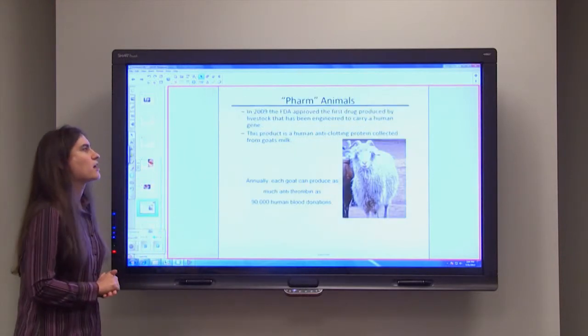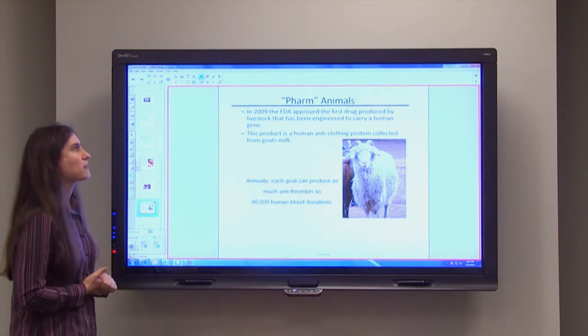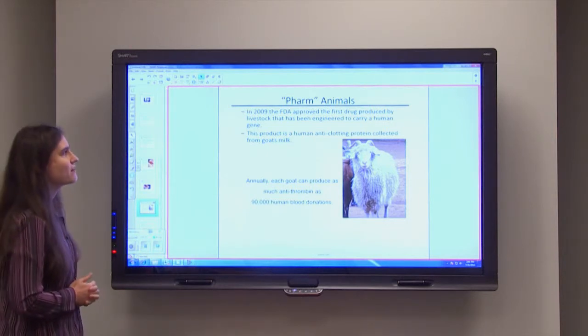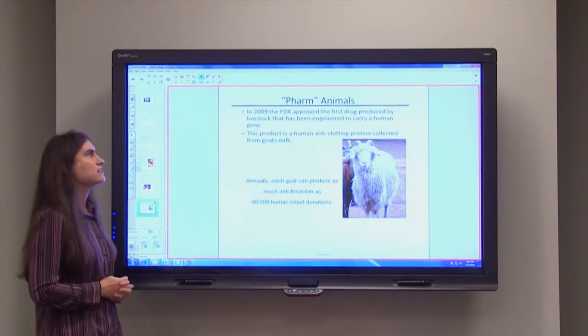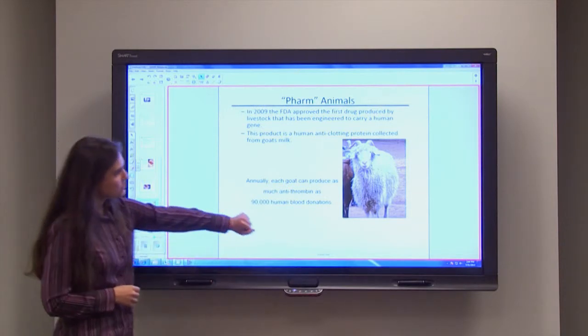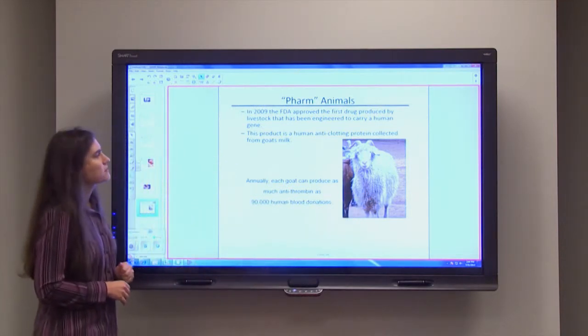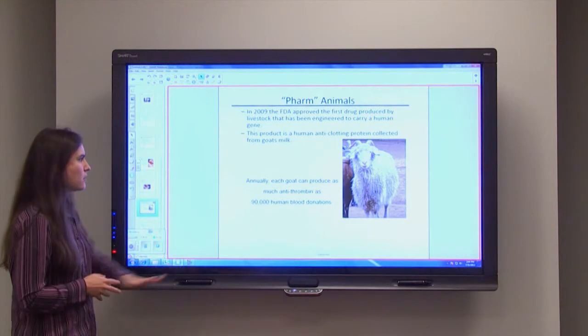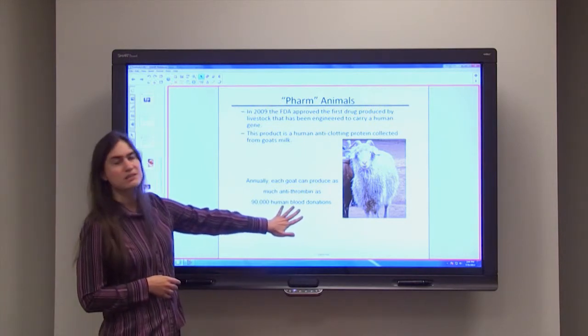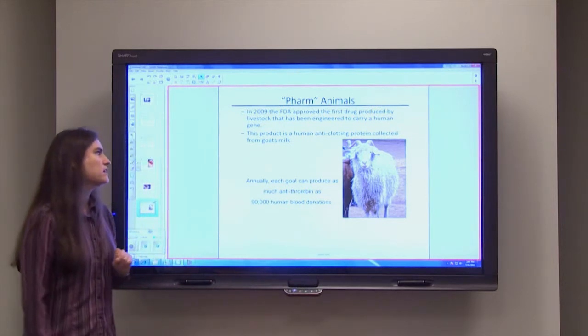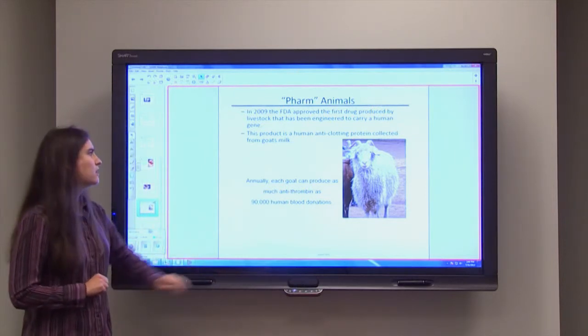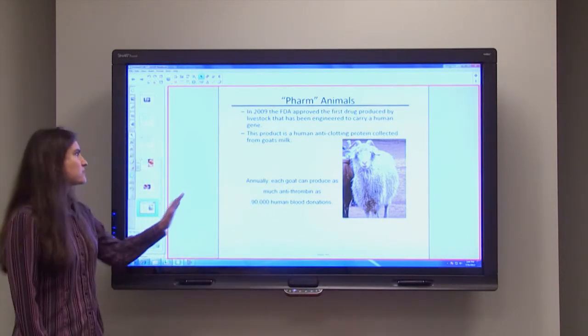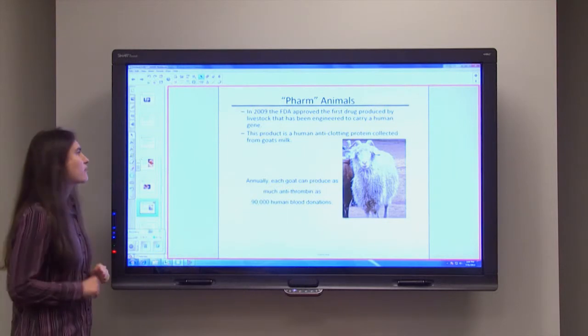Now another example of a genetically modified organism is one that we'd call a farm animal or pharmacy animal. So in 2009, the FDA approved the first drug produced by livestock that was engineered again to carry a human gene. And so you can see these goats right here. These guys are able to make a product that's called antithrombin. So normally in order to get a lot of antithrombin, we have to isolate it from human blood donations. But this one little goat here in one year, just collecting its milk, can produce as much antithrombin as 90,000 human blood donations. So this little guy right here is going to be very useful in making that product for us.